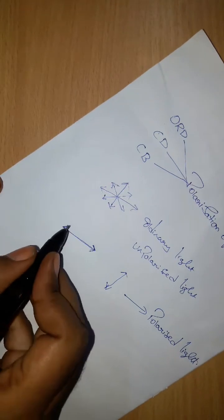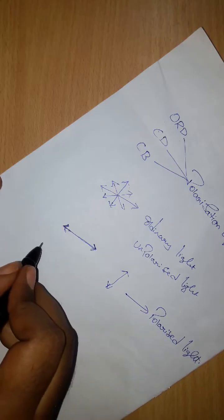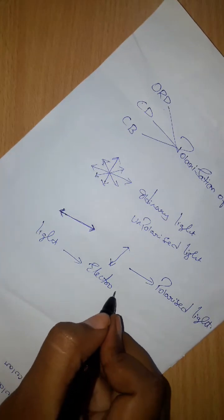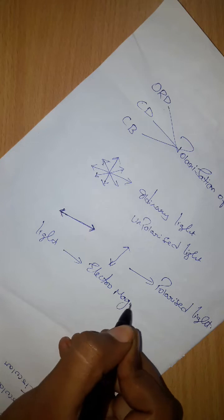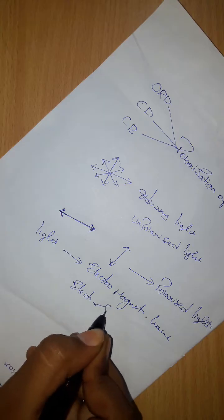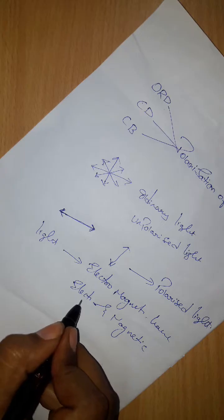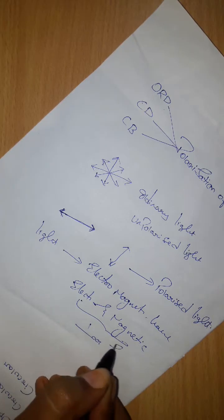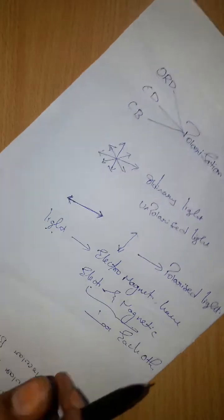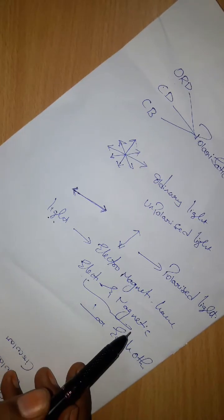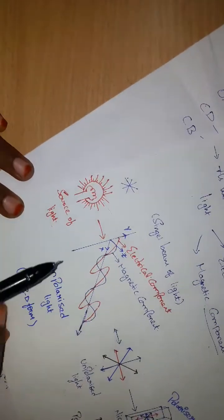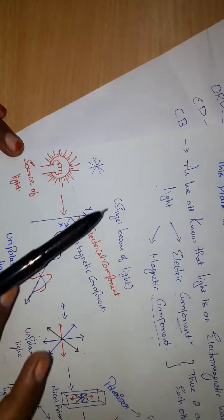As we all know, light is a form of electromagnetic wave. It has both an electrical component and a magnetic component. Both these electric and magnetic components are perpendicular to each other. Let us consider a source of light vibrating in different directions.